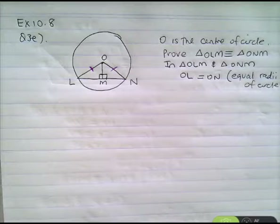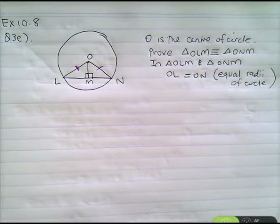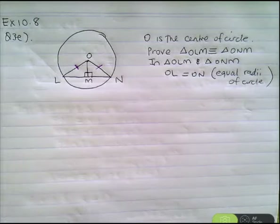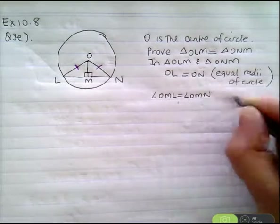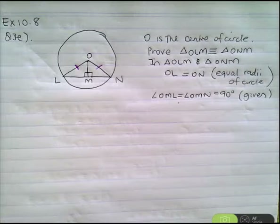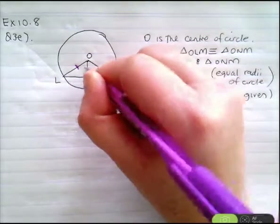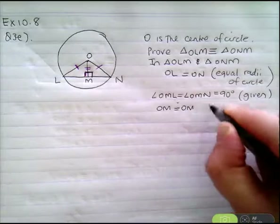I've marked it in purple. On the 90 degree angle — they didn't tell us that, but we can see the right angles in there. OL equals ON, equal radii of circle. What else? Angle OML equals angle ONM — equals 90 degrees — and that's given on the diagram. The question didn't say it was perpendicular, the markings were on the diagram, so you can just say 'given.' OM is a common side — double dash on that. OM equals OM, common side.